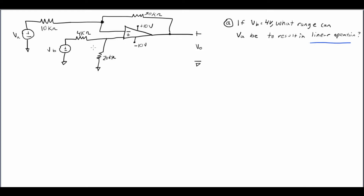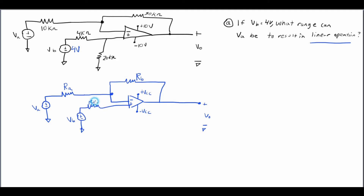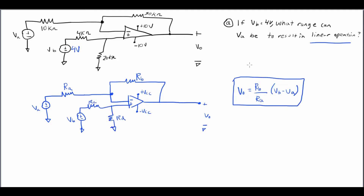Here we're being asked: VB is equal to 4 volts — what can I do with VA so that I still have linear operation? If you look at a difference op amp, there is a standard configuration, and this layout actually matches exactly what we have here. We know the output voltage is equal to this formulation of resistance and voltage, and we want to solve for what's going to be allowed for VA so that the op amp is still in linear operation.